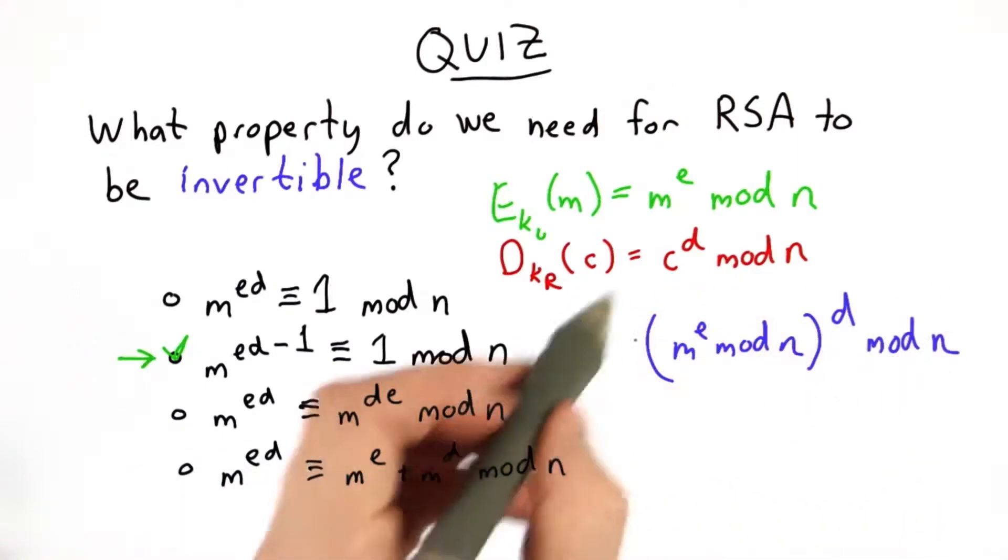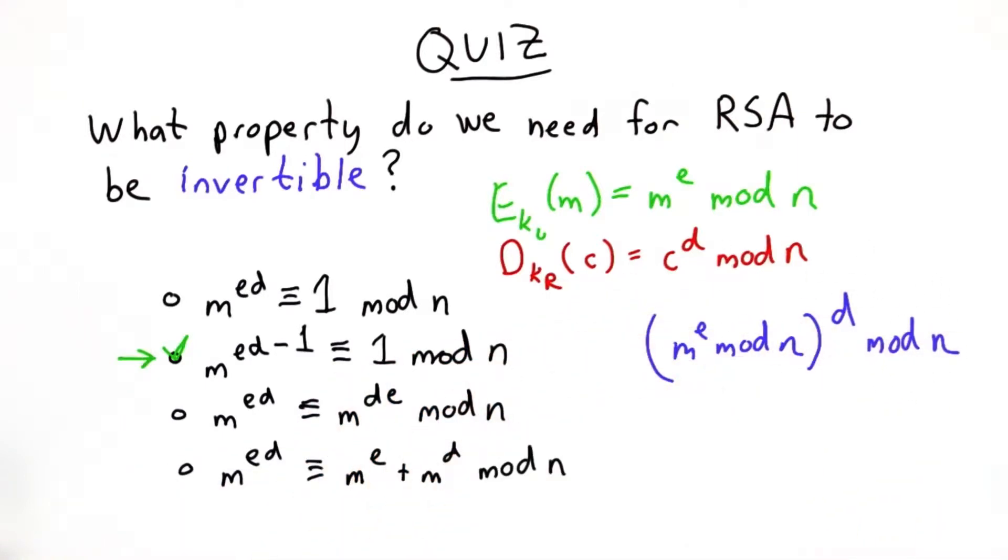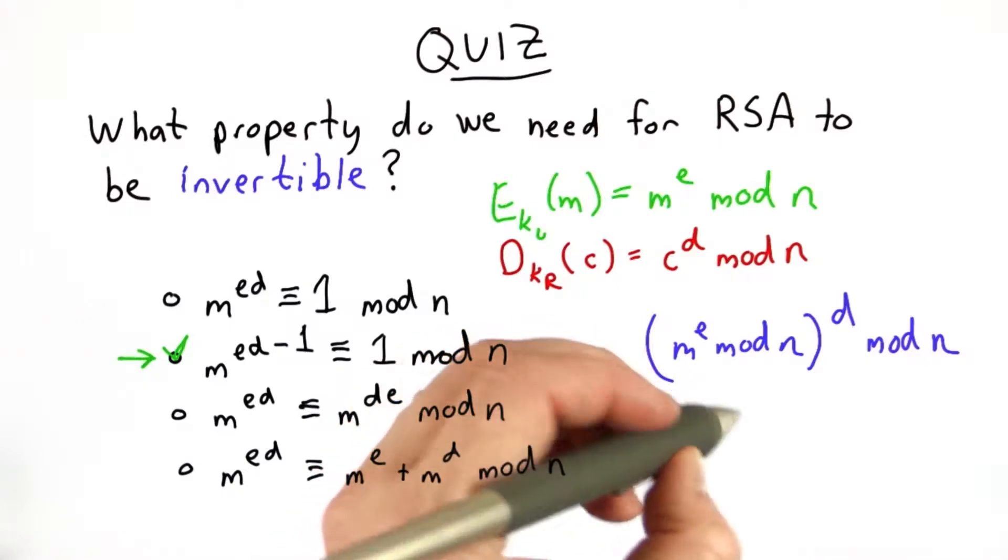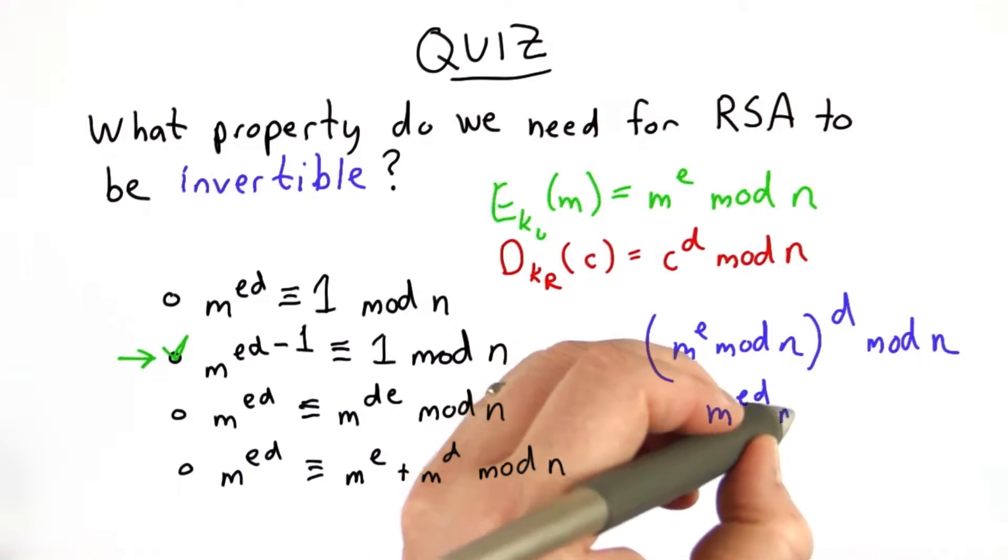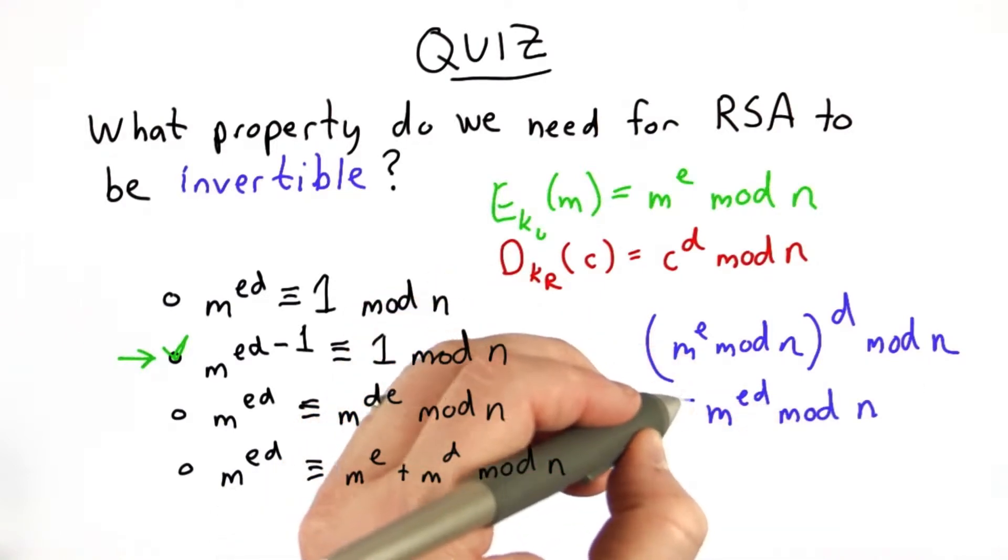If you remember when we looked at Diffie-Hellman, we have this rule for combining powers of powers that this is equivalent to m to the ed mod n, and we want that to be equivalent to the message.